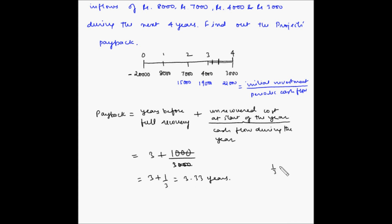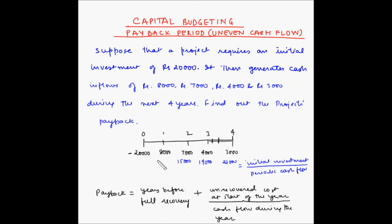Also, one-third of a year—a year has 12 months, so one-third of a year is 4 months. This can also be written as 3 years and 4 months. At 3 years and 4 months, the entire investment of 20,000 rupees will be recovered as per the payback period method. That makes sense.